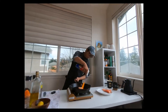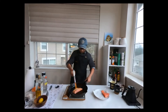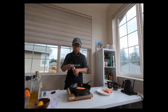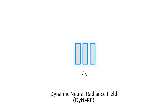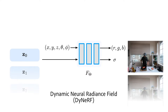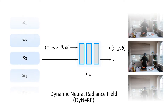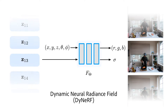Our approach takes the high quality and compactness of the static neural radiance field in a new direction to a model-free dynamic setting. At the core of our approach is a novel time-conditioned neural radiance field that we call DINERF. DINERF represents scene dynamics using a set of compact latent codes. The learned latent codes and the DINERF network form an expressive representation to capture dynamic scenes, allowing us to interpolate in both space and time. We can then use volume rendering to generate images for any view and time.